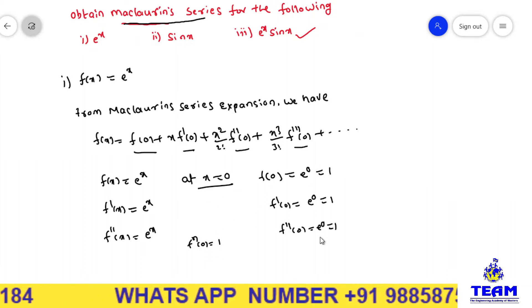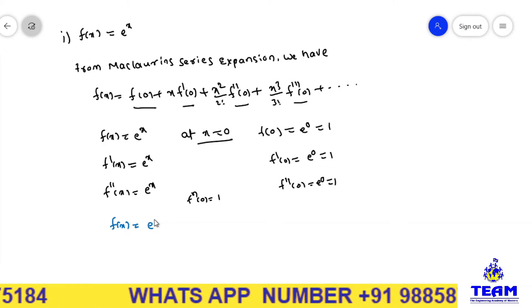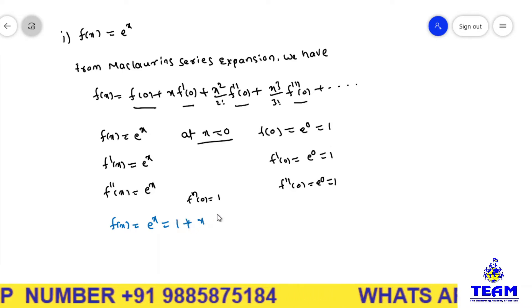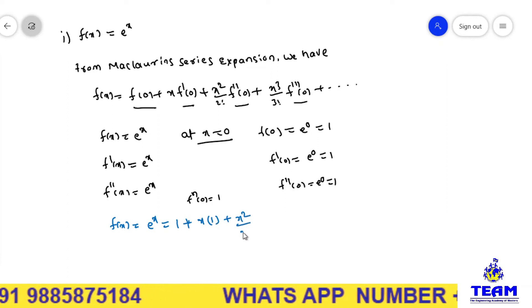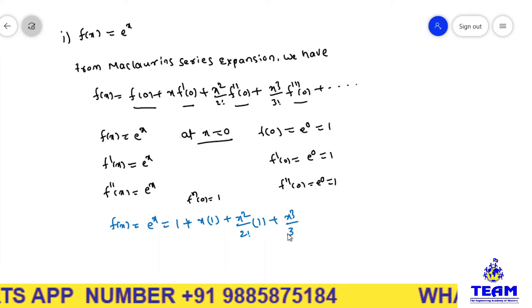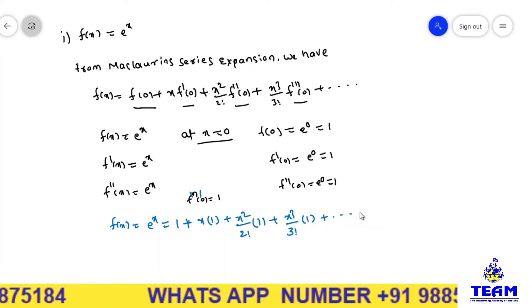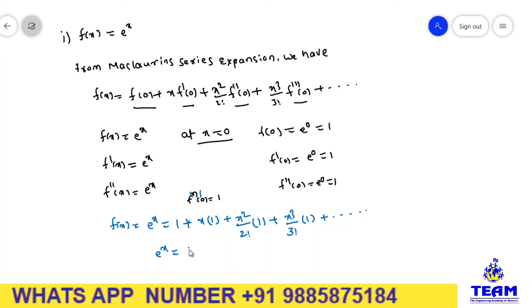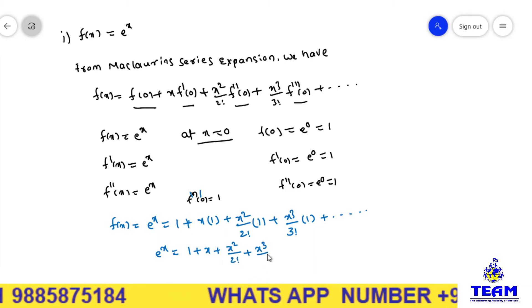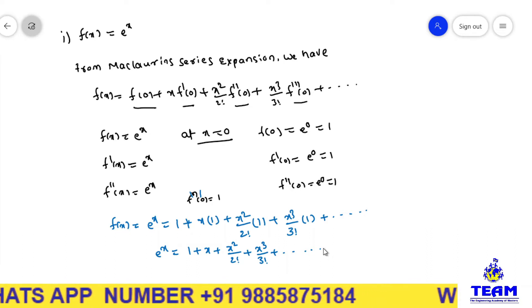Now substituting all these values in the above equation, f(x) = e^x. The expansion: e^x = f(0) + x·f'(0) + x²/2!·f''(0) + x³/3!·f'''(0) + ... = 1 + x + x²/2! + x³/3! + ... and so on. This is the expansion of e^x.